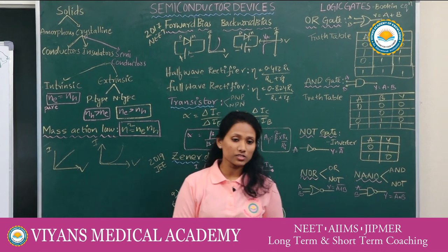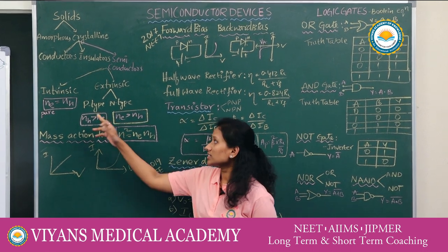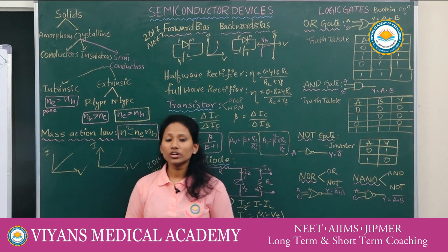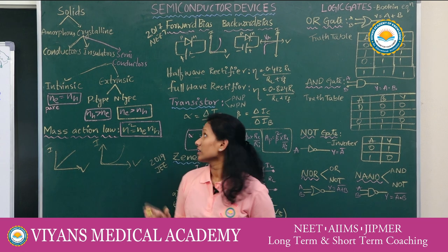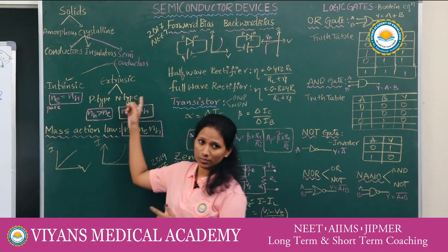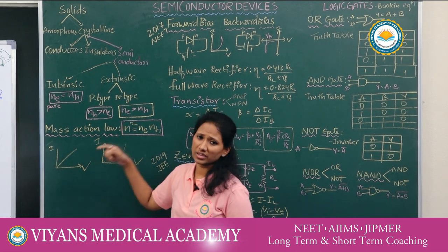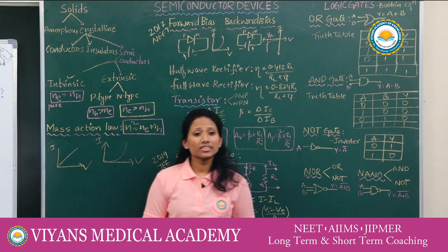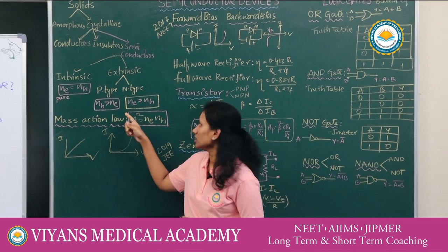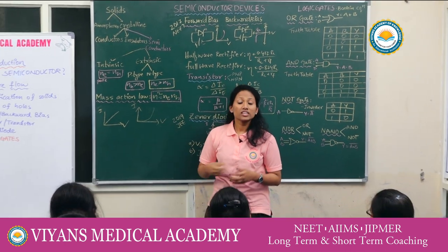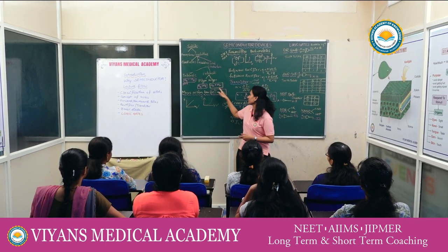These semiconductors are again classified into intrinsic and extrinsic semiconductors. In intrinsic semiconductors, the number of electrons equals the number of holes, so we call them pure semiconductors. Extrinsic semiconductors are classified into P-type and N-type. P-type semiconductor is doped with a low valency impurity, so the number of holes is greater than electrons. N-type semiconductor is doped with a high valency impurity, so the number of electrons is greater than holes.